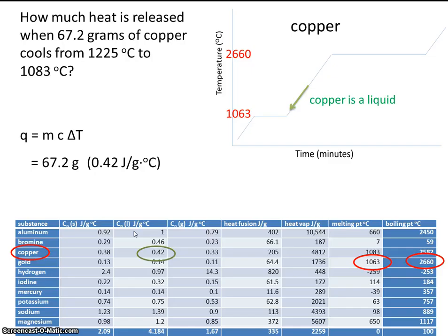You know that delta T is temperature final minus initial. So let's make sure we plug it in in that fashion. The copper cools from 1225 to 1083. So it looks like its final temperature is this. This is where it's ending up. Minus the initial temperature, 1225.